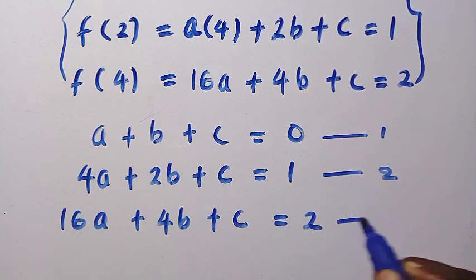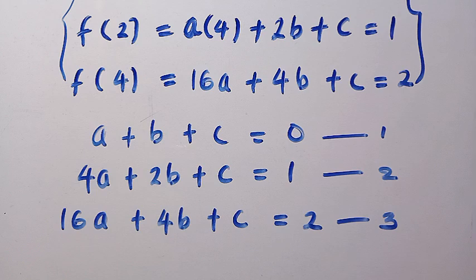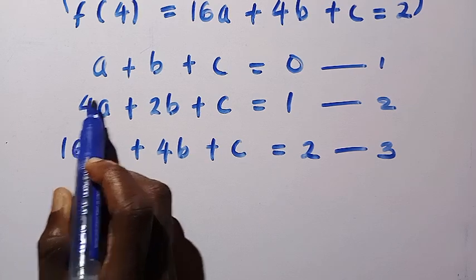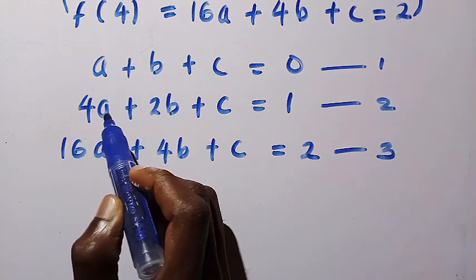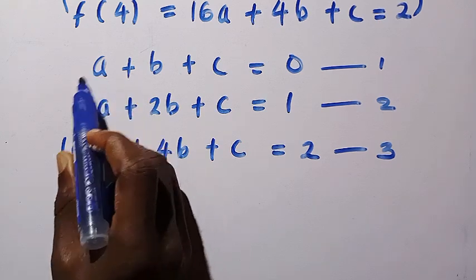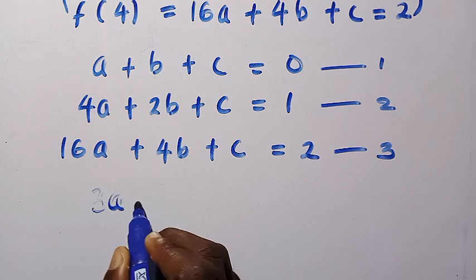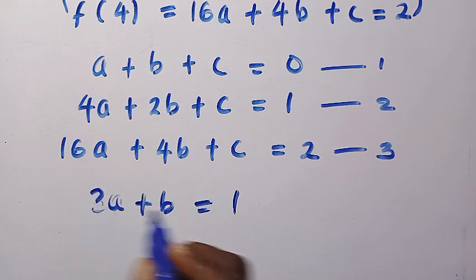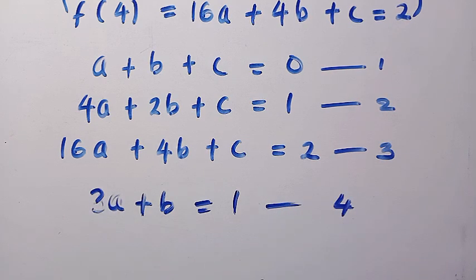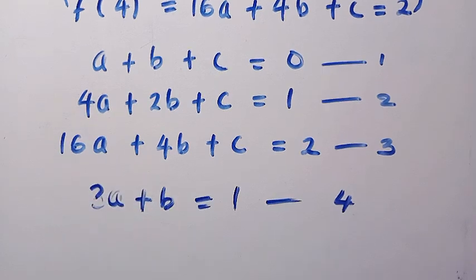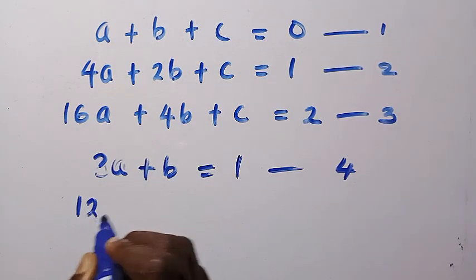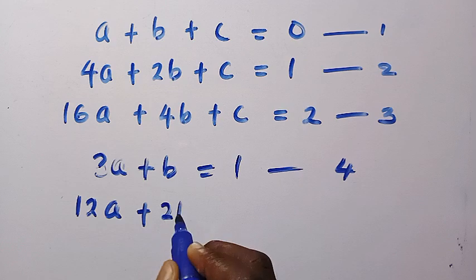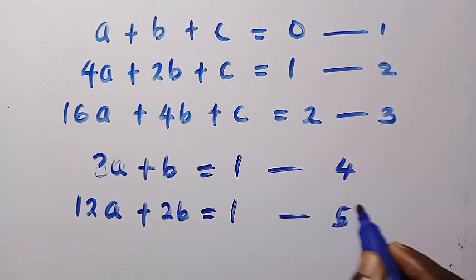Let's solve these simultaneously. Subtracting equation 1 from equation 2 gives us 3a plus b equals 1 — call this equation 4. Subtracting equation 2 from equation 3 gives us 12a plus 2b equals 1 — call this equation 5.